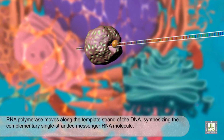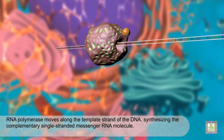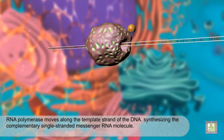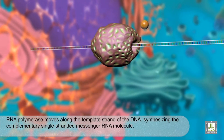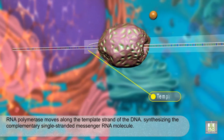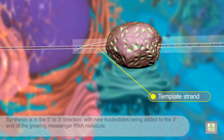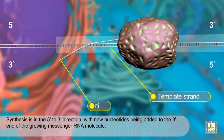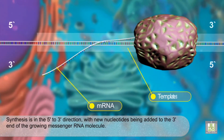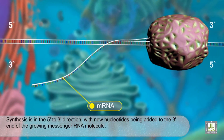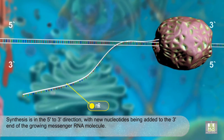RNA polymerase moves along the template strand of the DNA, synthesizing the complementary single-stranded messenger RNA molecule. Synthesis is in the 5 to 3 direction, with new nucleotides being added to the 3 end of the growing messenger RNA molecule.